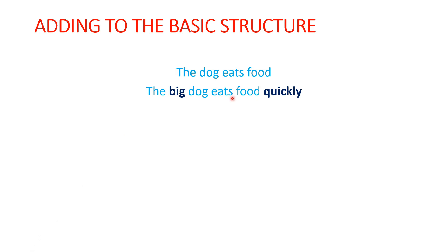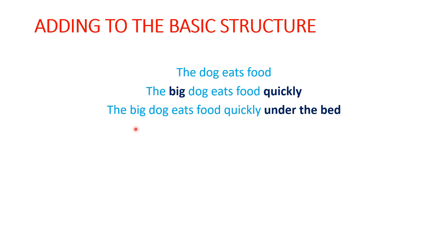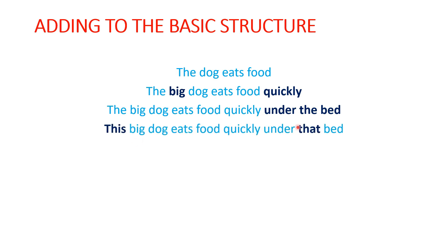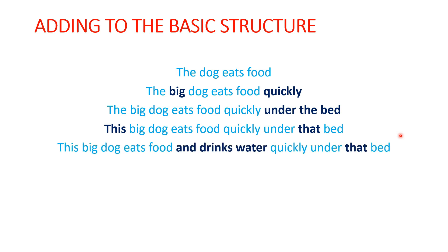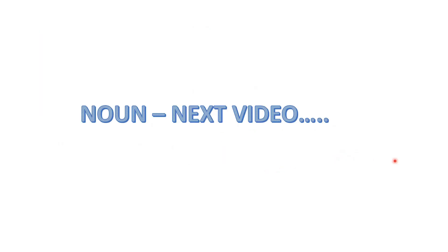'The big dog eats food quickly.' Now we are adding more complexity: 'The big dog eats food quickly under the bed.' And now: 'This big dog eats food quickly under that bed.' We are adding more information, and the sentence becomes: 'This big dog eats food and drinks water quickly under that bed.'